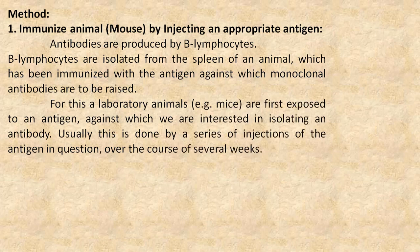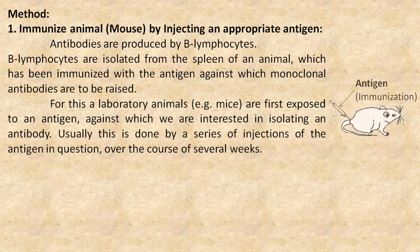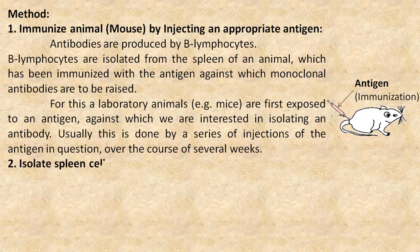For this, laboratory animals are first exposed to an antigen against which we are interested in isolating an antibody. Usually, this is done by a series of injections of the antigen in cohesion over the course of several weeks.